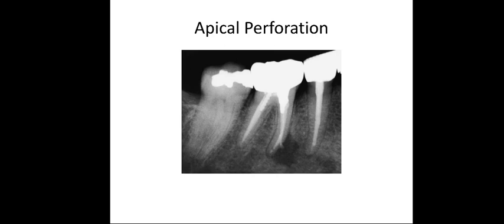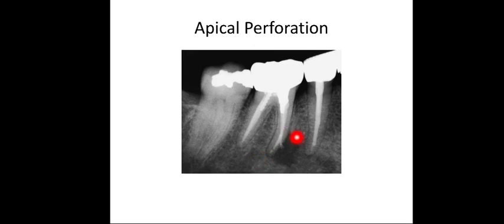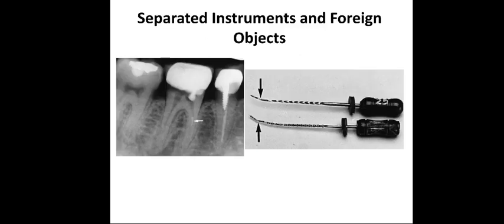Apical perforation can be felt by hemorrhage and bleeding and excruciating pain during and after treatment. It can be investigated radiographically by placing a gutta-percha cone and taking a radiograph to see the perforation. This causes irritation to the periodontal ligament and periodontitis, and decreases the success rate of treatment, leading to complications for the patient.